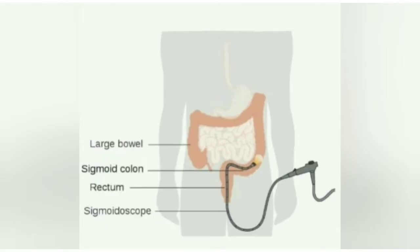Sigmoidoscopy uses a half-inch thin flexible tube to examine inflammation and bleeding in the rectum and sigmoid colon. This technique is employed instead of colonoscopy to visualize the lower part of the colon. It has a bendable tube which has a tiny light and camera on the end.